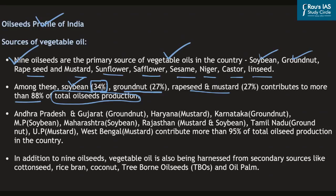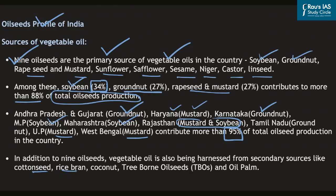In addition to these nine primary oilseed sources, there are secondary sources from which oil is extracted: cotton seed, rice bran, coconut, tree-born oilseeds and oil palm. Regarding the present status of oilseed and vegetable oil production, almost 70% of oilseeds are cultivated in rain-fed areas heavily dependent on monsoon rains with no irrigation supply. In 2019-20, domestic availability of edible oils from both primary and secondary sources was only about 10.65 million tons against a total domestic demand of 24 million tons.